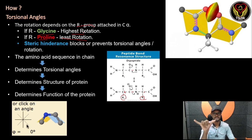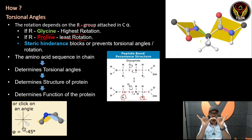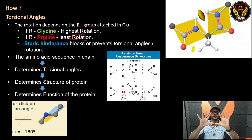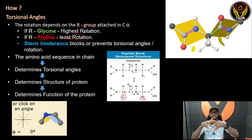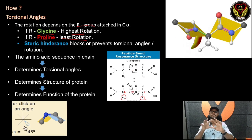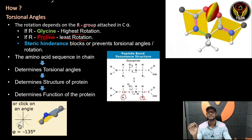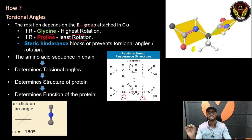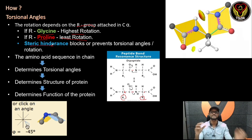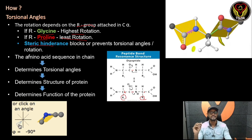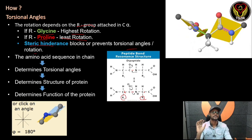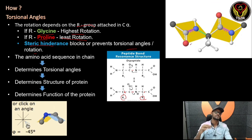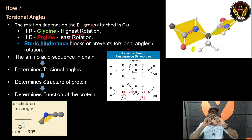There are two amino acids — it is very simple. The rotation is easier for simpler amino acids. If I rotate this amino acid, the rotation is less for bulkier ones. Glycine has the highest torsional angle rotation and proline has the least. The most important concept here is steric hindrance — it blocks or prevents the torsional angle rotation.